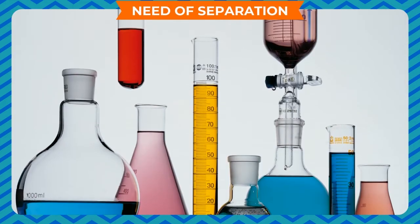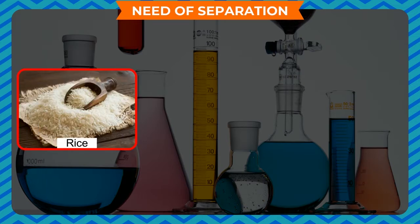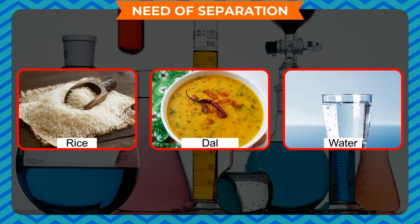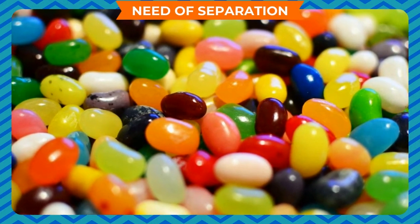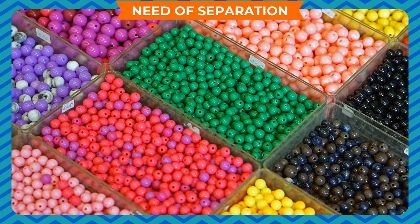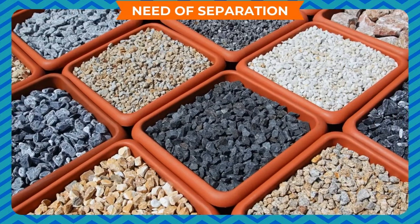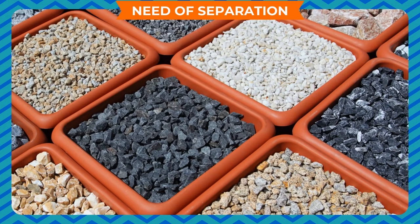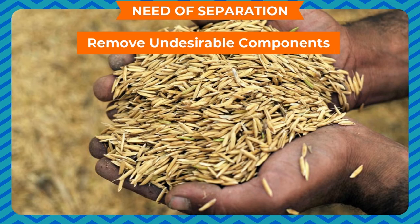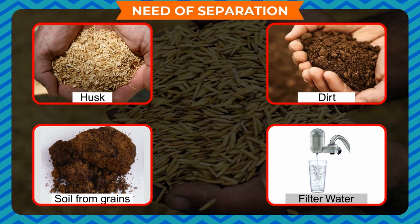Need of separation: we use many substances in pure form such as rice, dal, and water in our daily life. There are many mixtures which are desirable and undesirable for human beings, so the undesirable components must be removed. Some important reasons for separation: to remove undesirable components — we remove husk, dirt, and soil from grains, and filter normal water before using it.